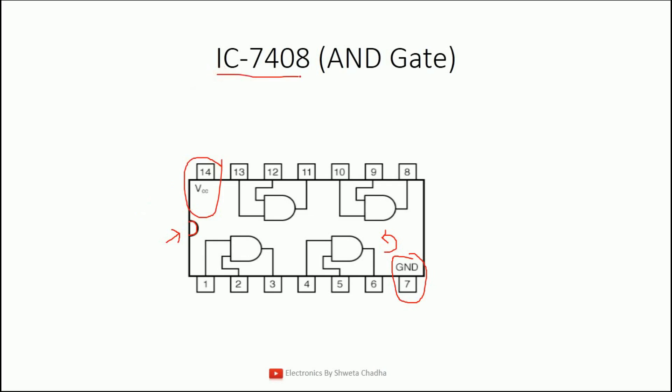7408 is a two-input AND gate. Although we can have N inputs in any logic gate, this IC is meant for only two-input gates. Gate number 1: pin 1 and pin 2 are inputs, pin 3 is output. Gate number 2: pins 4 and 5 are inputs, pin 6 is output. Gate number 3: pins 10 and 9 are inputs, pin 8 is output. Gate number 4: pins 13 and 12 are inputs, pin 11 is output. This is the pin diagram of the AND gate, IC 7408.